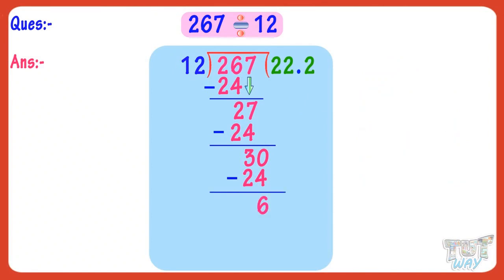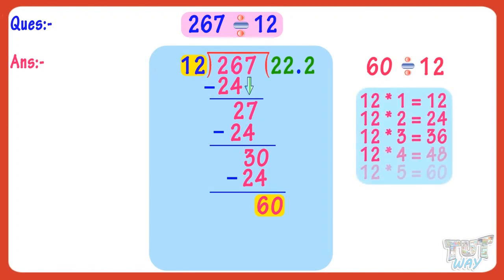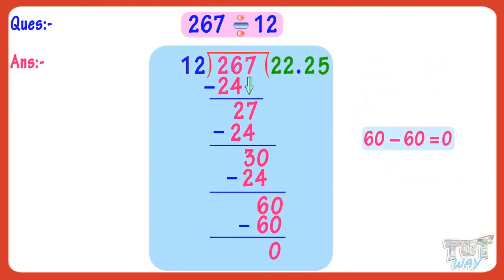Again, we have to divide 6 by 12. Once you have put a decimal in the quotient, you can put 0 to the right of the number left. So put 0 to the right of 6, and we have to divide 60 by 12. The nearest multiple of 12 is 60. 12 multiplied by 5 equals 60. So write 5 in the quotient and 60 below 60. On subtracting, we get 0. So we have done the complete division. Our answer is 22.25.